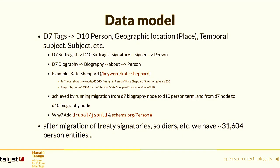First was the data model. The Drupal 7 site linked a lot of things together by plain tagging. In some cases these tags were typed — there was a distinct field indicating whether a tag was a place or a person. We leveraged that to migrate into distinct Drupal 10 taxonomies, breaking out a single taxonomy into specific ones: person, geographic location, temporal subject, et cetera. For most of these we borrowed existing configs from the Islandora project.